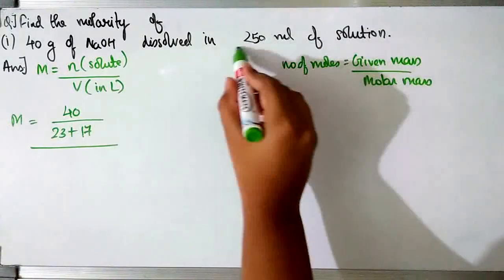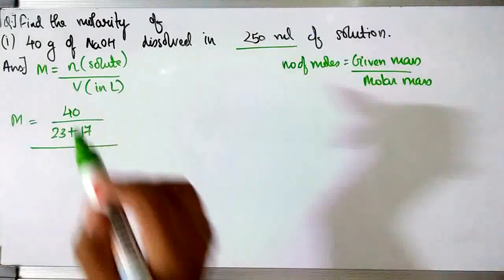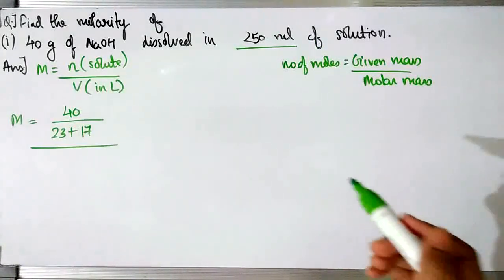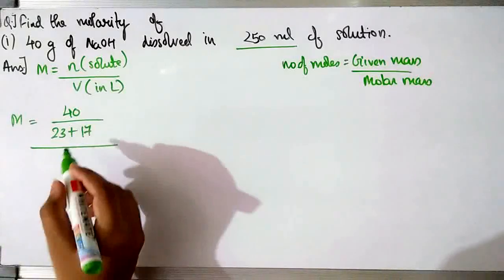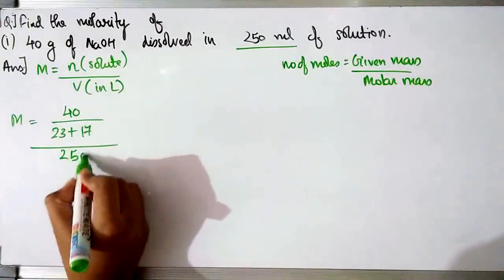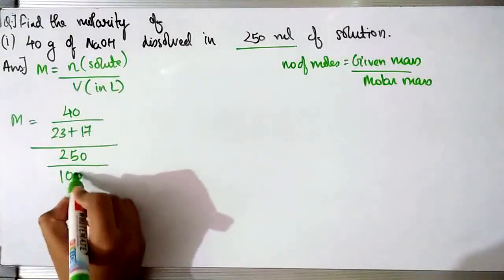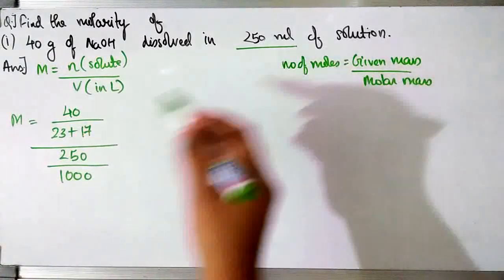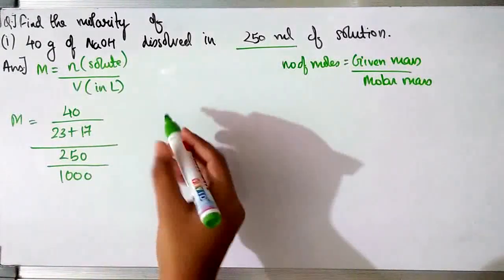The volume of solution given is 250ml. But we have to take the volume of solution only in litres — we cannot take it in ml. So we are going to convert 250ml into litres, which becomes 250 divided by 1000.